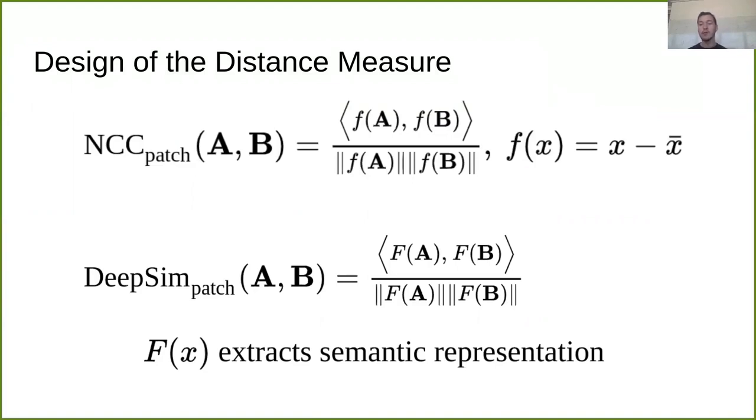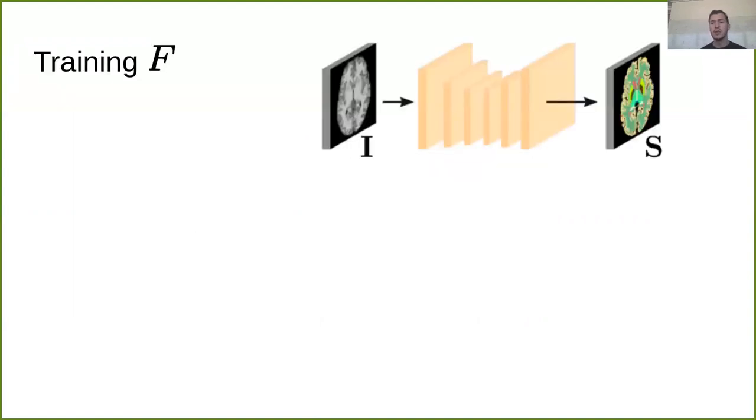Now, the question is, how do we find a good semantic representation of these patches? But thankfully, we are doing deep learning here. And deep learning is really good at learning representations of data. So we can use a surrogate task, like for example a segmentation task in this case, or also an auto-encoding task if you want to go with an unsupervised approach, and train the surrogate model on our dataset.